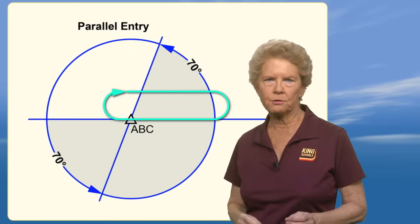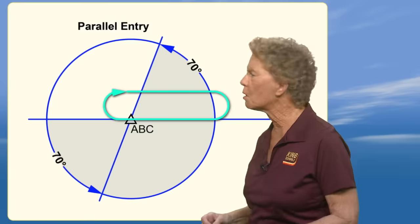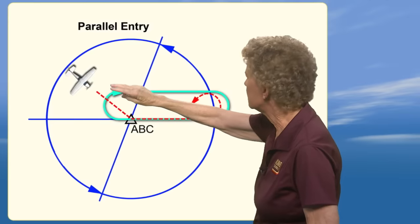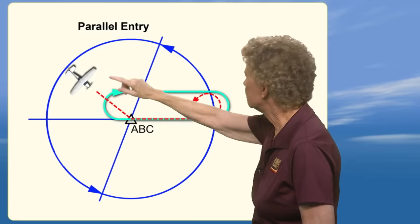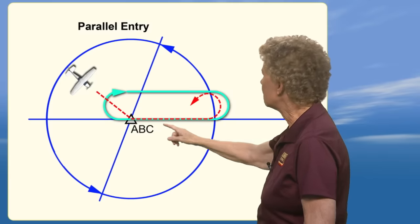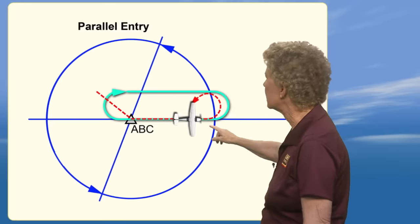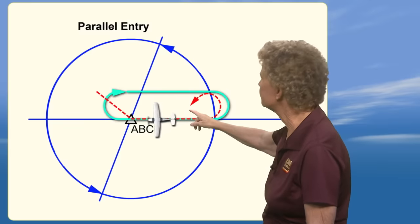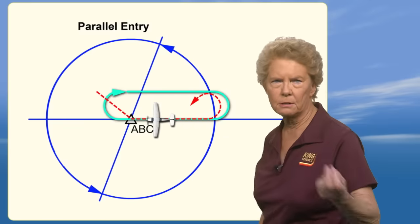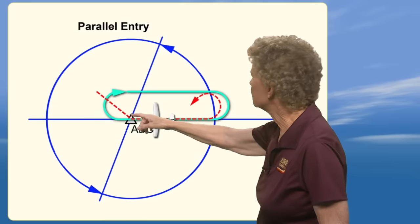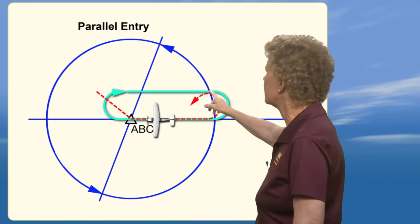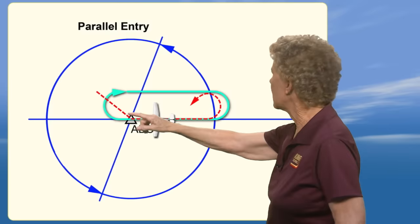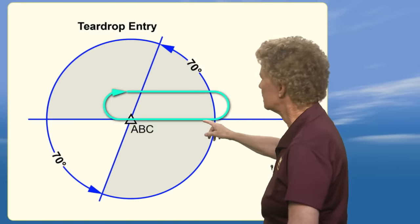Now let's assume that you're proceeding to the ABC VOR from the medium-sized area for a parallel entry. Coming in from the medium-sized parallel entry area, you fly to the fix, then fly outbound on the outbound leg heading — 090 in this case — parallel to the outbound leg for one minute. Then make a left turn all the way around to a heading to intercept the inbound leg. Fly back to the holding fix and then continue flying the holding pattern. With a parallel entry, you cross the fix, then fly outbound parallel to that inbound leg.